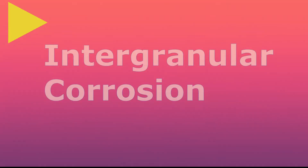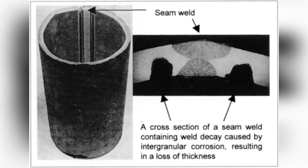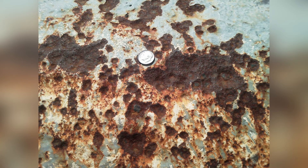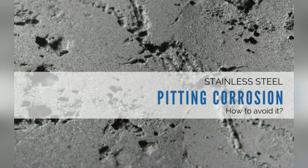Intergranular corrosion does not attack the metal surfaces but rather the metal's crystalline boundaries. It occurs when the grain boundaries in the metal form an anode and the interior of the grain acts as a cathode. Pitting corrosion is a localized form of corrosion leading to small holes, surface damage, or pits on metal surfaces. Its mechanism works in the same manner as intergranular corrosion.